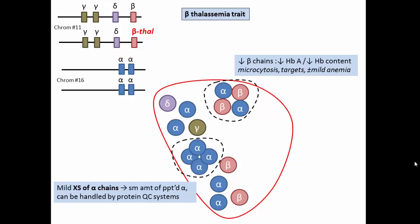Less hemoglobin A is formed, less hemoglobin per cell, and because the amount of hemoglobin influences the size of the cell, the cells are smaller than normal, microcytic, have a target morphology, and the individual may or may not have a mild degree of anemia.